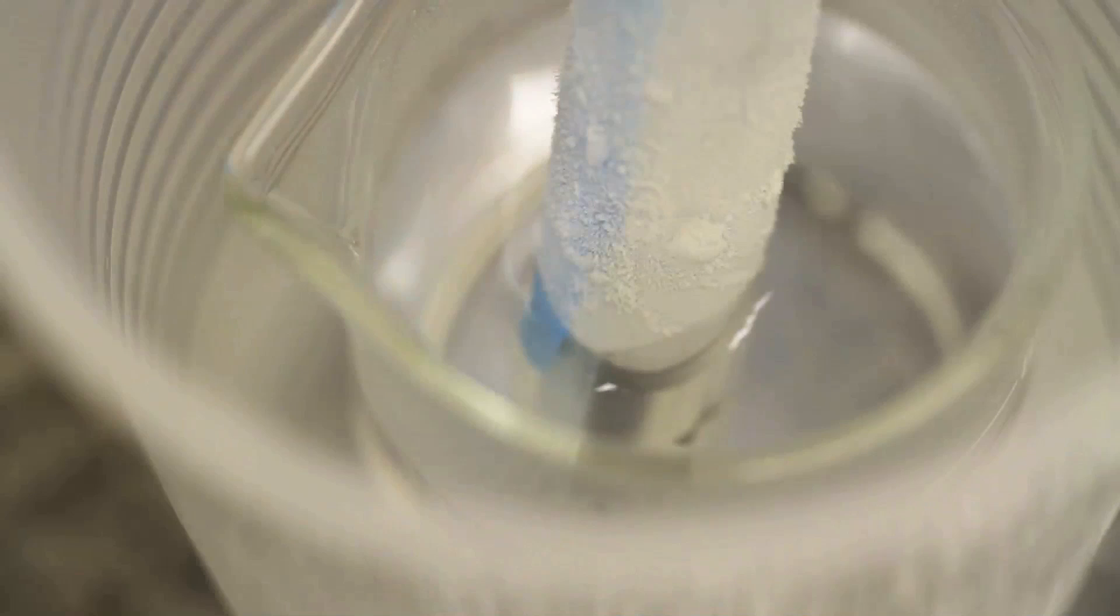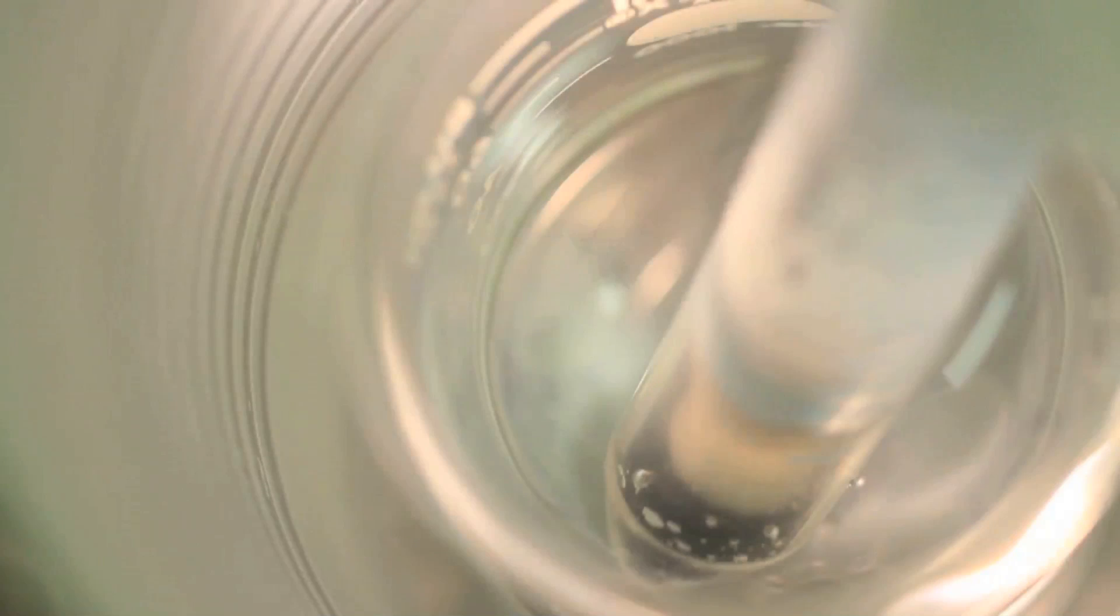After the pre-solar grains are extracted and identified, we can do a lot of things with them. And one recent study that we did is we're trying to date individual pre-solar grains. When did they form? When we measure the concentration of particular isotopes, we can calculate how long the grain was in space, so when the grain formed.